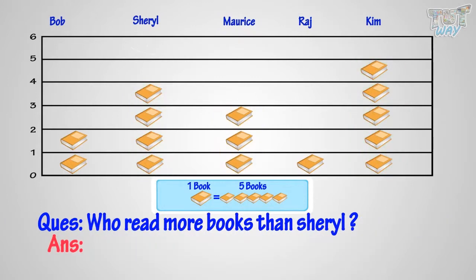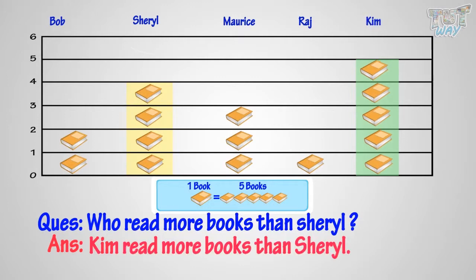Can you tell who read more books than Cheryl? Let's find it out. There is one column where there are more book symbols than Cheryl, and that column belongs to Kim. So, Kim read more books than Cheryl.